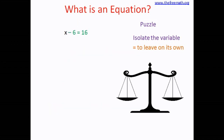Let's solve one more puzzle: x minus 6 equals 16. Again we need to isolate x, so we do an inverse operation. The inverse of minus 6 is plus 6, so we add 6 on the left hand side and, to keep the balance, we add 6 on the right hand side too. 16 plus 6 is 22, so x equals 22.